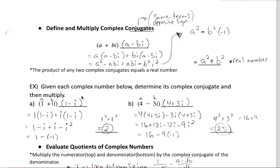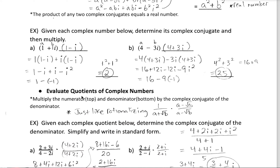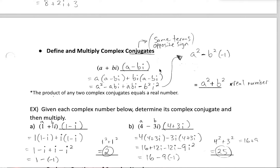To divide imaginary numbers, we have to think about conjugates. Conjugates were introduced when we talked about rationalizing radicals in denominators — we multiplied the top and bottom by the conjugate, which simplified and eliminated the radicals, leaving a real number in the denominator. We're going to do nearly the same thing using conjugates of imaginary terms.